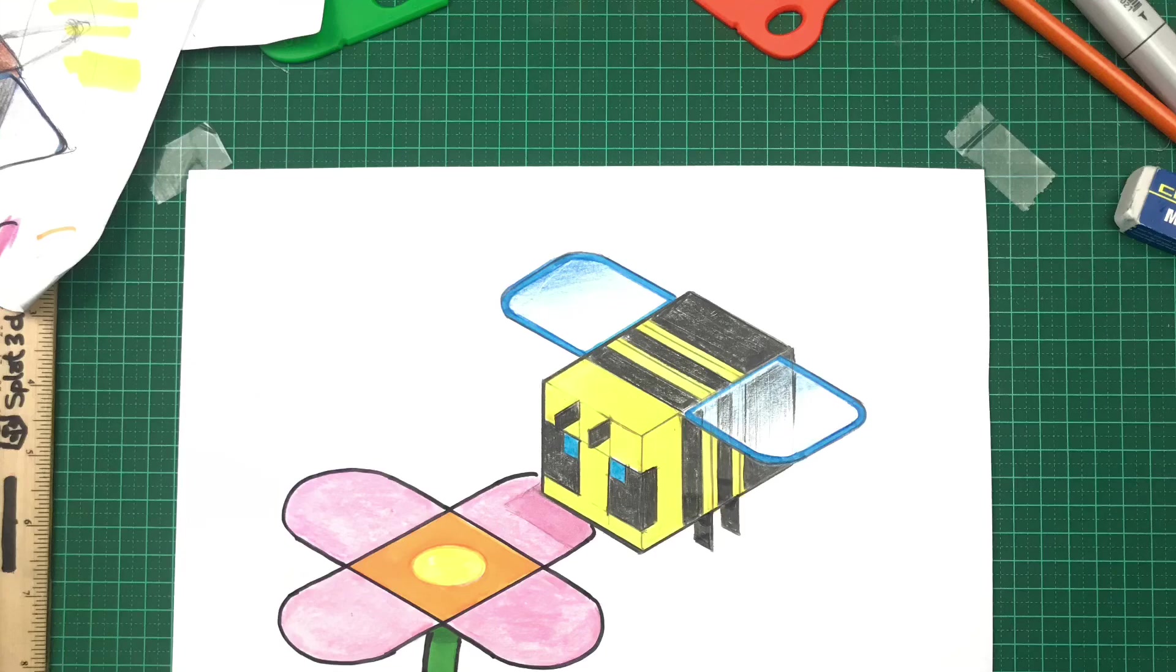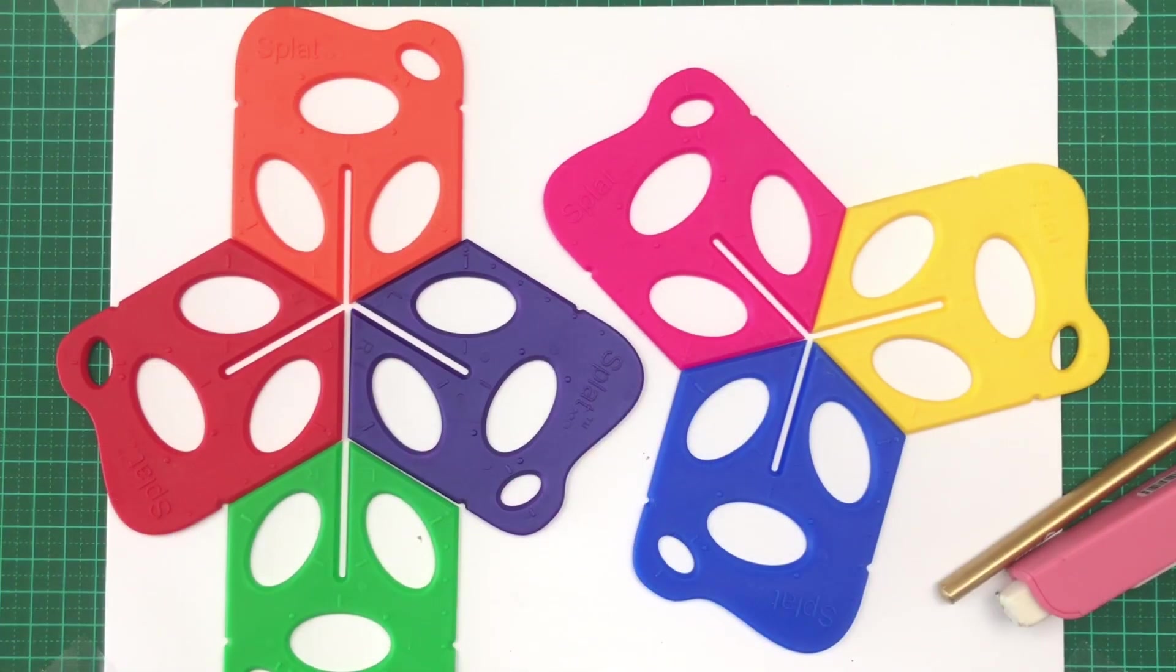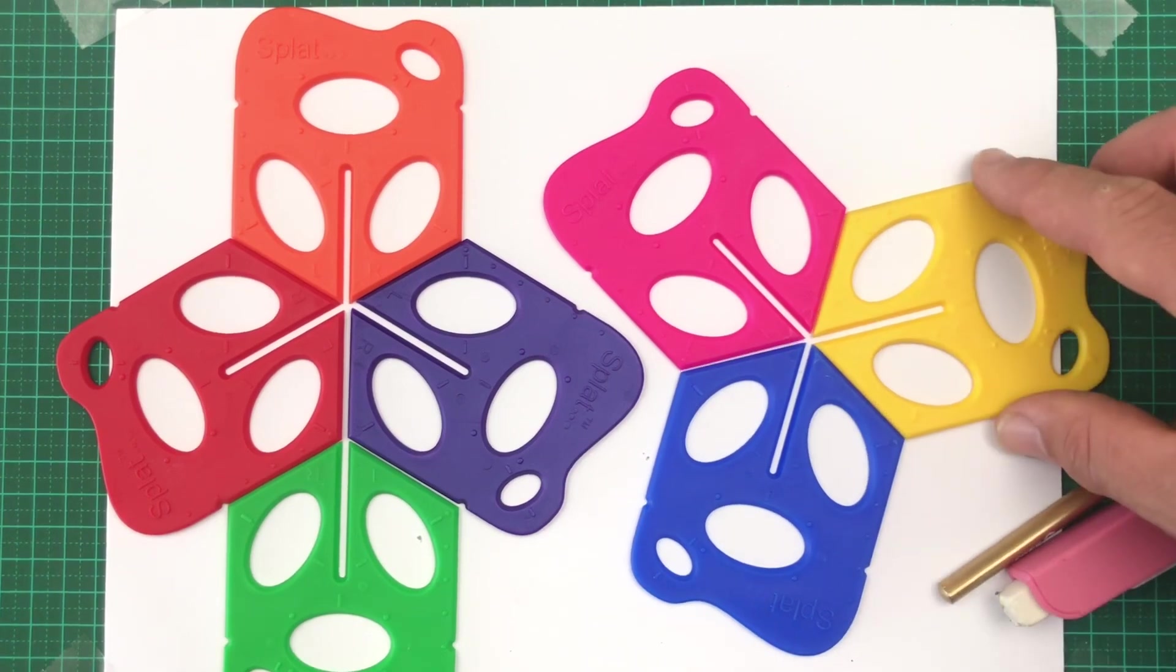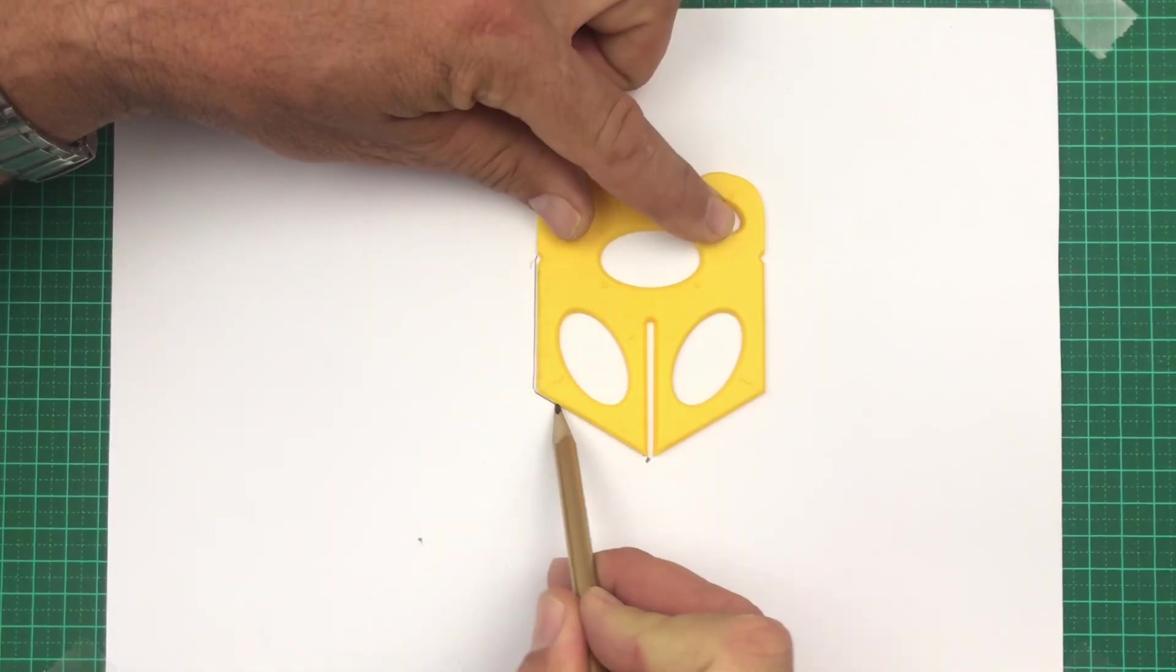Hello, thanks for joining me today. We're drawing a Minecraft Bee. If you have a splat you can grab one, it might make it easier for you. The color I'll choose is yellow today for a bee. Let's get started.